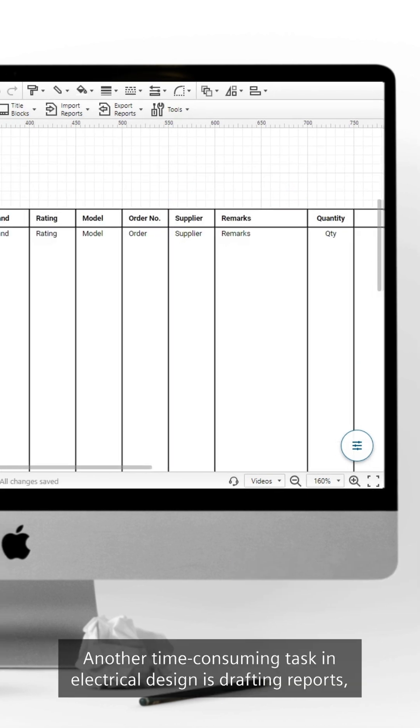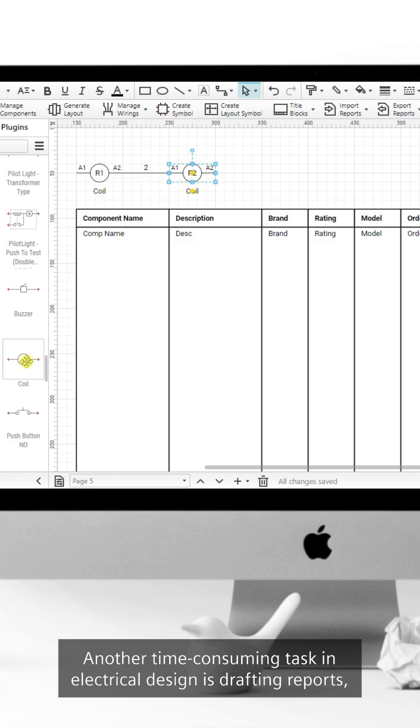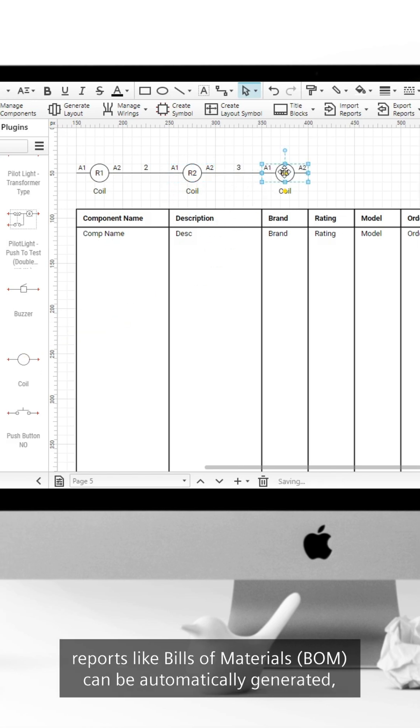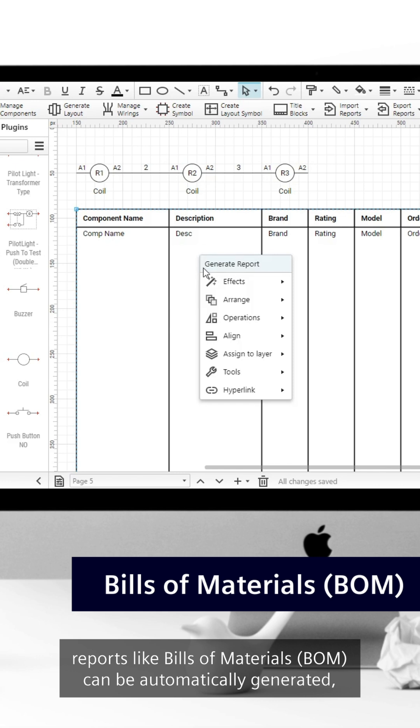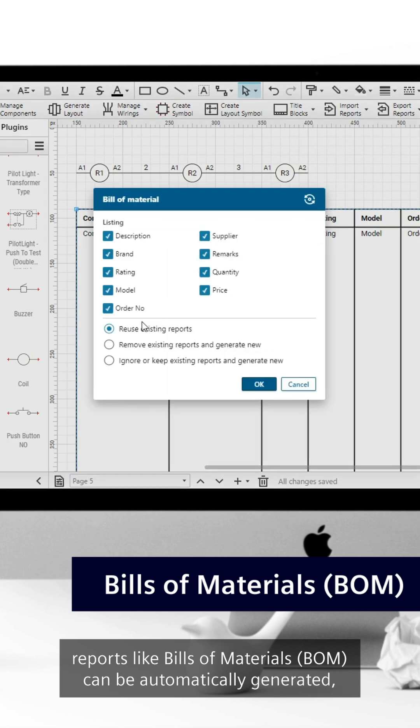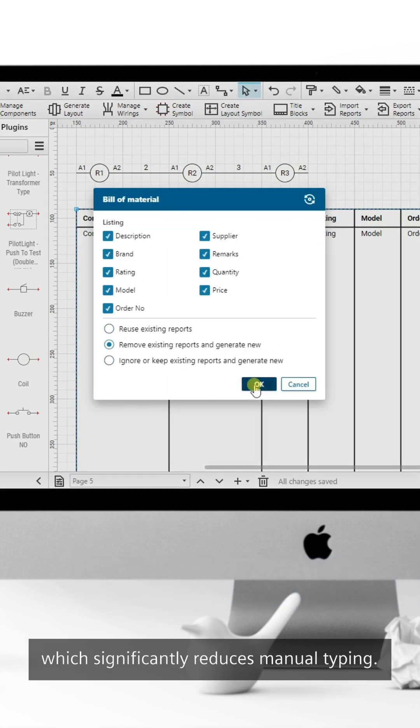Another time-consuming task in electrical design is drafting reports, but in Capital X Panel Designer, reports like Bills of Materials (BOM) can be automatically generated, which significantly reduces manual typing.